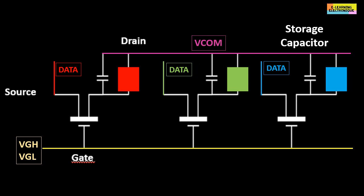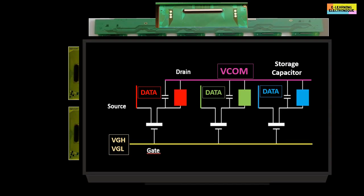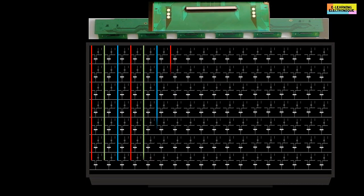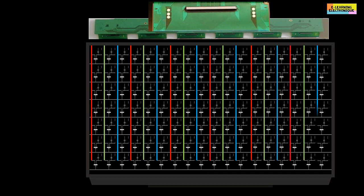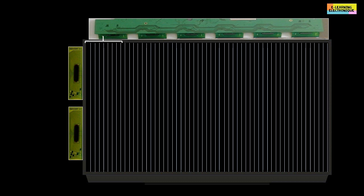To control all these circuits, electronic components called drivers are attached to the LCD screen. There are two types: at the top or bottom, along the width of the screen, are the electronic circuits that control the data. On one or both sides, along the height, are the circuits that control the gate of the transistors. The circuits connected vertically to the source of each sub-pixel are called source drivers or column drivers. The number of source drivers depends on the number of columns on the screen and the technical characteristics of the driver — i.e., the number of columns it can handle.